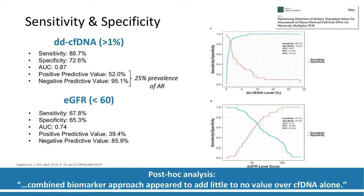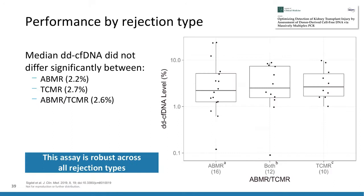These investigators also looked at the different types of rejection. The median donor-derived cell-free DNA was actually quite similar between pure ABMR, pure TCMR, and mixed ABMR-TCMR. Unlike the first-generation study, this study was able to detect TCMR just as effectively as ABMR and mixed rejection. There were 10 patients with pure T-cell-mediated rejection, and all 10 had donor-derived cell-free DNA above 1% and therefore tested positive. This study validates the use of donor-derived cell-free DNA in blood as an accurate indicator of kidney injury and rejection across a range of pathologies, including both acute and chronic findings.